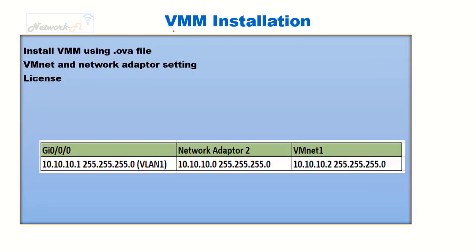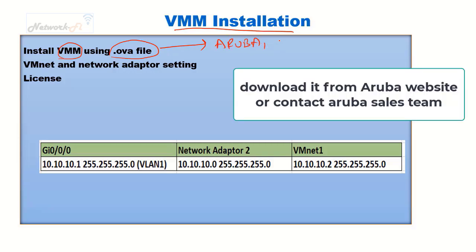Now let's talk about the Virtual Mobility Master installation. We will install it using a .ova file, which can be downloaded from the Aruba website or obtained by contacting the Aruba sales team. Let's see how we install Virtual Mobility Master in VMware.